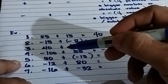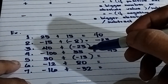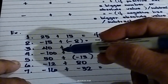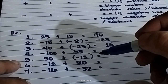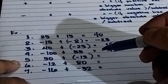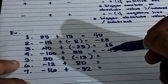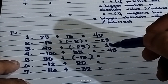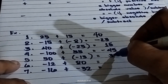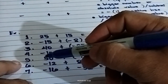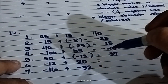Number five: positive 50 plus negative 13. They are unlike signs. You're going to subtract: 50 minus 13, so the answer is 37. Since 50 has the bigger absolute value, the answer is positive 37.